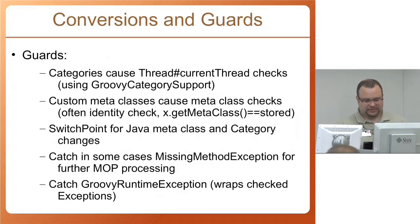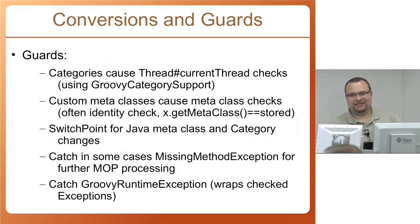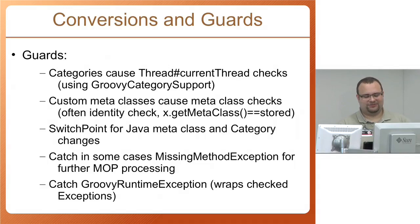Then there are the cases of missing method exceptions which I may have to catch to go into our MOP — a very bad decision to use runtime exceptions for control flow. Back then it made sense; now it's very ugly. Then there are runtime exceptions working as wrappers for checked exceptions, mostly because most of the Groovy runtime is still written in Java. Groovy doesn't know checked exceptions at all, but Java does. If you throw a checked exception somewhere in there and have to transport it outside, you have to wrap it in a runtime exception.